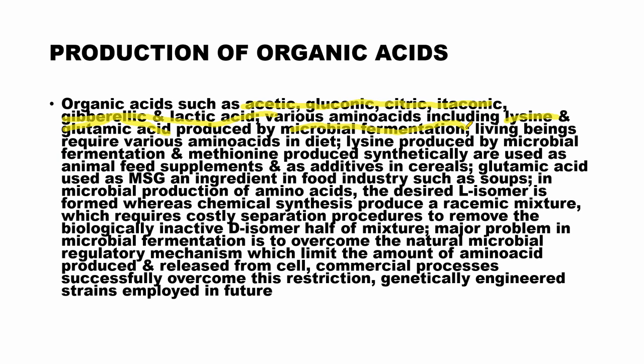Living beings require various amino acids in their diet — essential and non-essential amino acids, as you may have studied in biochemistry. Lysine, for example, is produced by microbial fermentation, whereas methionine is produced synthetically. These are used as animal feed supplements and also as additives in cereals.